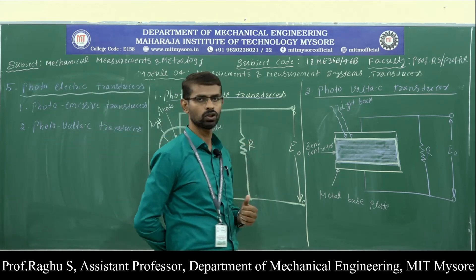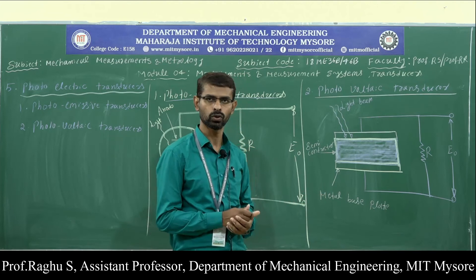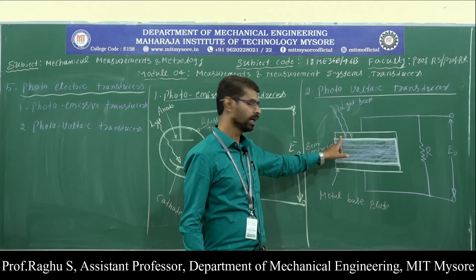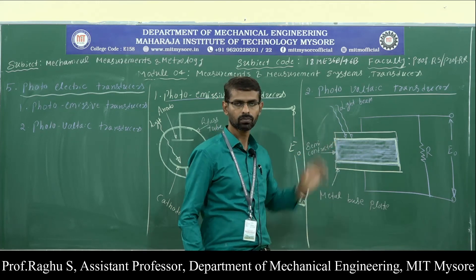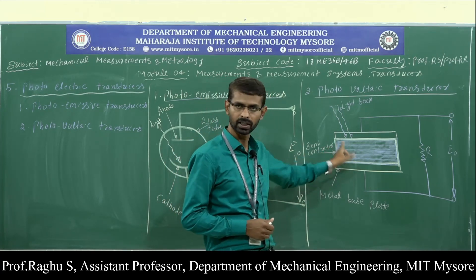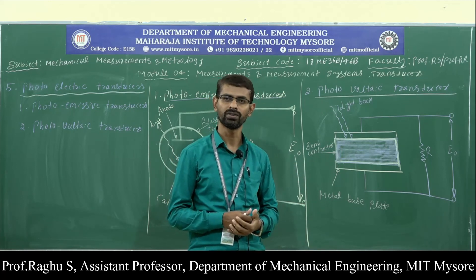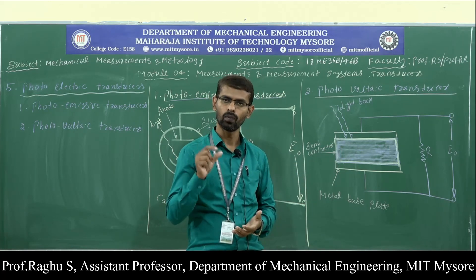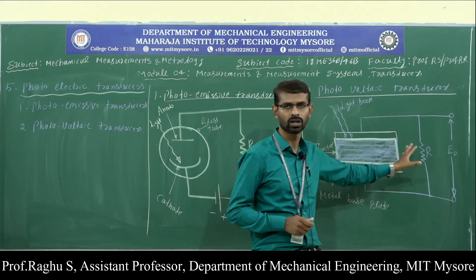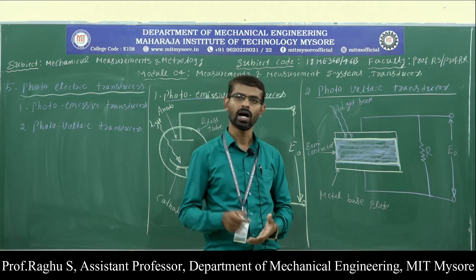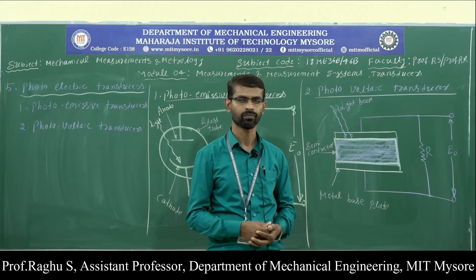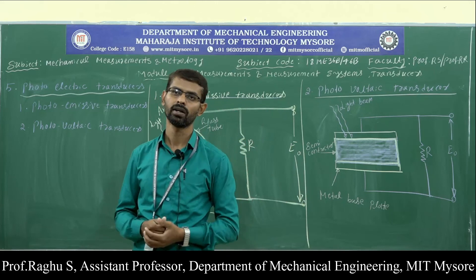In the photovoltaic transducer, we have a semiconductor material placed on a metal base plate and covered by a thin metal film. When a light beam is incident on the semiconductor material, a small voltage is developed. The developed voltage is directly proportional to the intensity of incident light. This voltage is measured using a voltage measuring instrument and taken as the intensity of incident light. This is the working principle of the photovoltaic transducer.